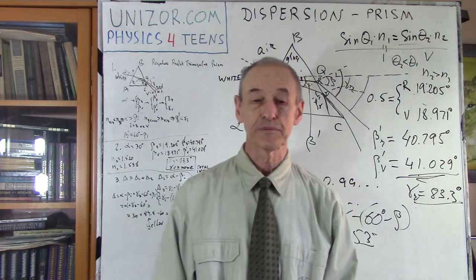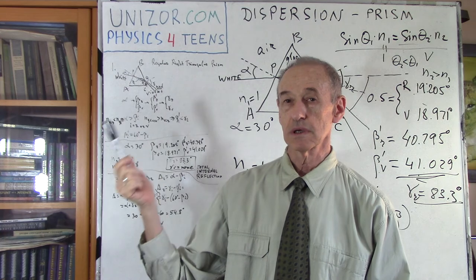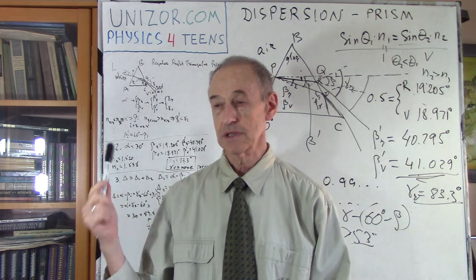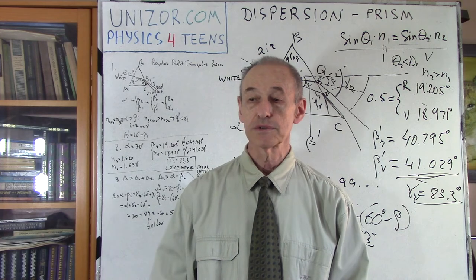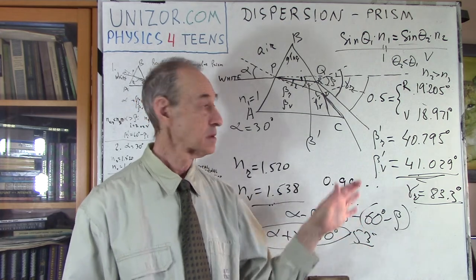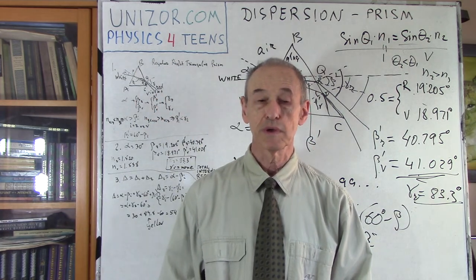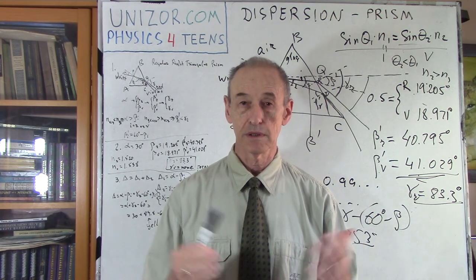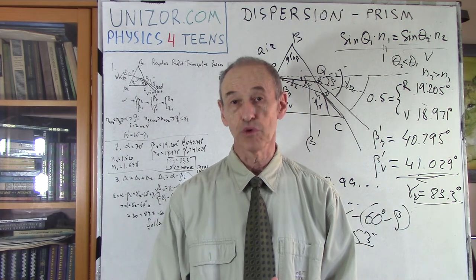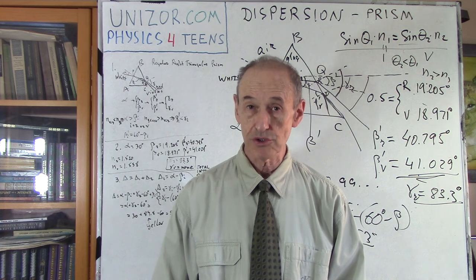I suggest you read the notes for this lecture. Go to unizor.com, Physics for Teens, Waves, Phenomena of Light, and find the lecture on dispersion on a prism. The notes contain tables with numbers for all different colors and their angles, plus clearer diagrams. The website always provides both a visual lecture and a textual component — essentially a textbook and a presentation together. Okay, that's it. Thank you very much and good luck.